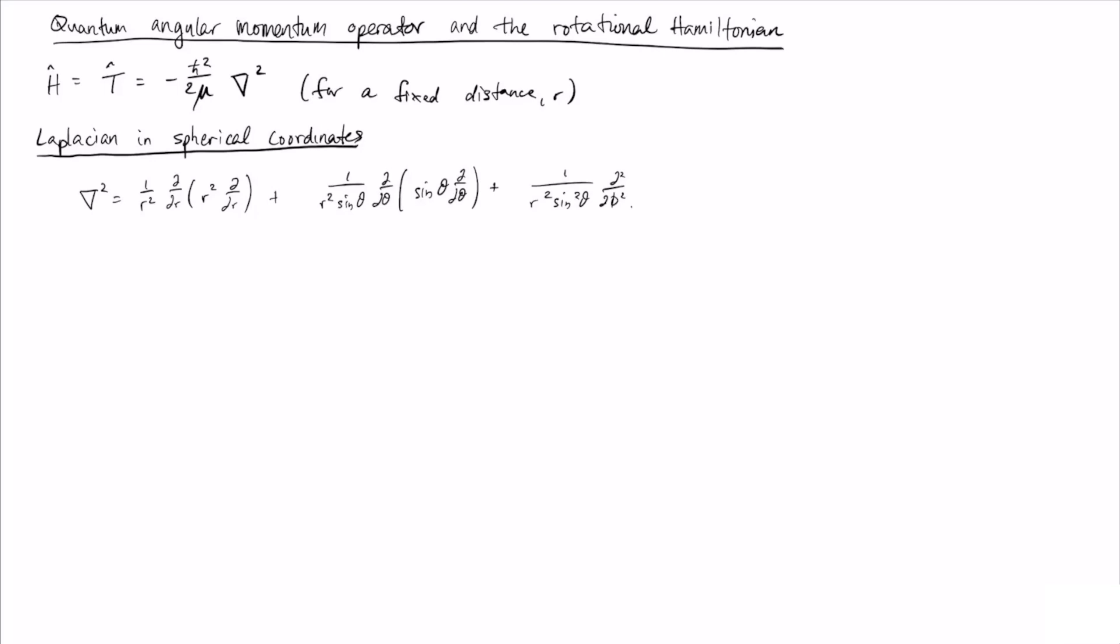In the previous video, it was written like this, and this is incorrect, and we'll see why this ends up being incorrect later on. So just to be really clear, this is the correct rotational Hamiltonian we're going to use with mu and not I. So the reduced mass and not the moment of inertia.